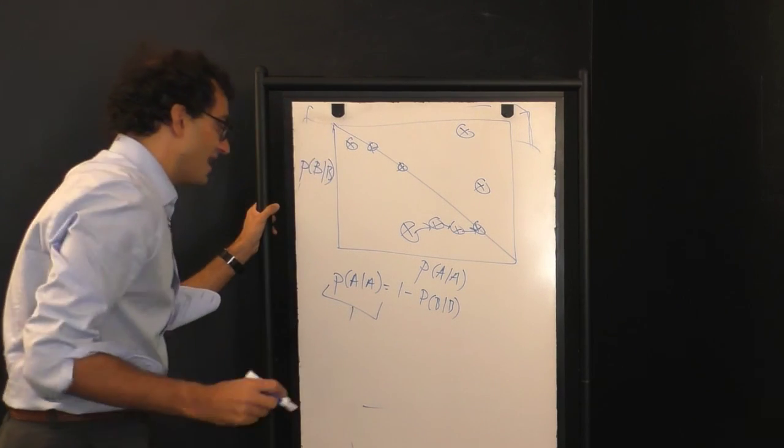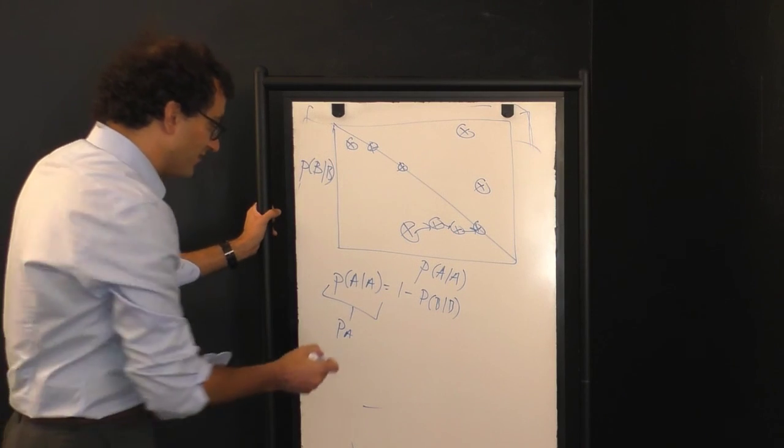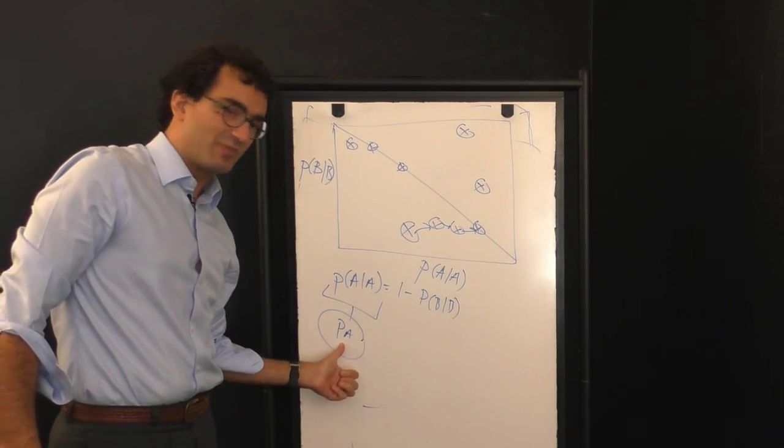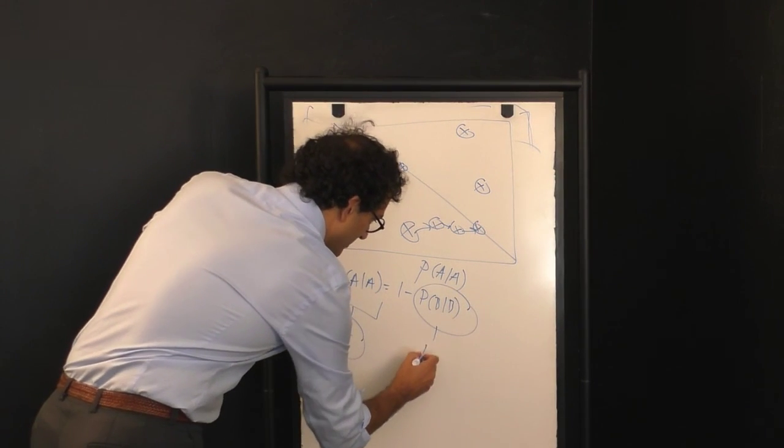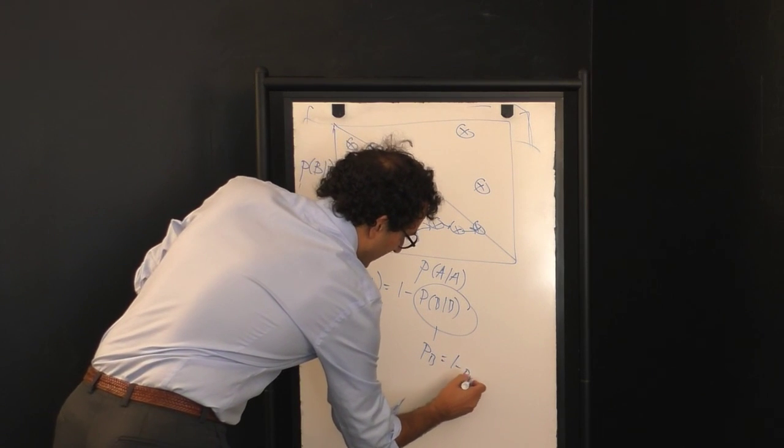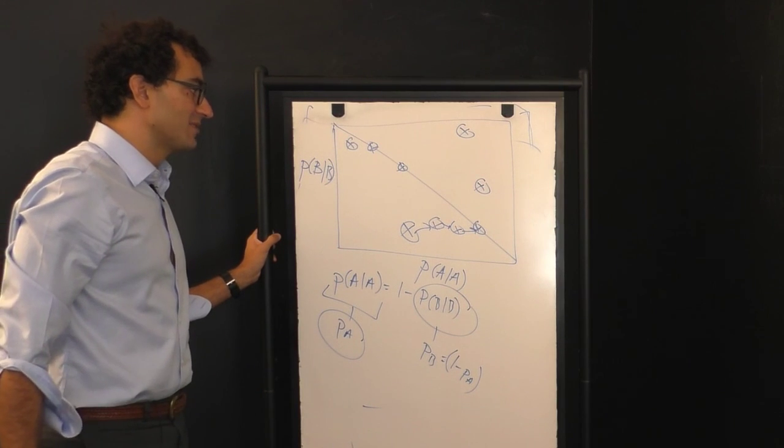And the way to think about this is P A given A, when you coarse-grain enough, just becomes the stationary probability, the stationary distribution for that Markov chain P A. The self-loop probability for B just becomes the probability for B, and we know that that now has to be equal to 1 minus P A for that stationary distribution.